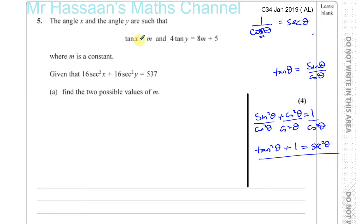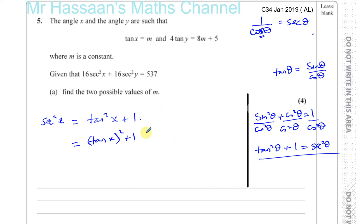I know that M is tan X. And sec squared X can be written as tan squared X plus 1, which is tan X all squared plus 1. Since tan X equals M, I can rewrite that as M squared plus 1. So this is going to be 16 times bracket M squared plus 1. And from the given equation, tan Y is equal to 8M plus 5 over 4.